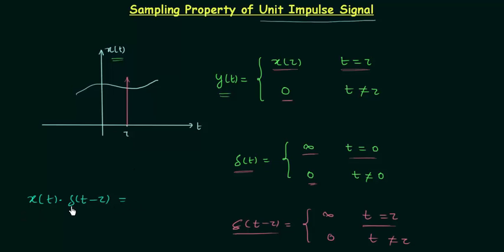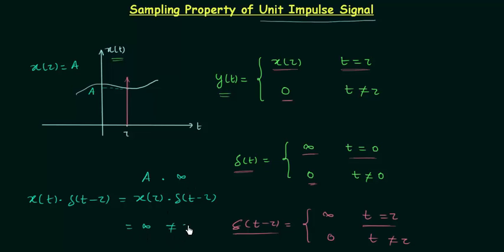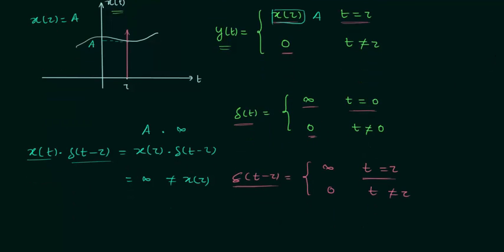We can say that xt multiplied with delta(t minus tau) is the same as multiplying x(tau) with delta(t minus tau). Let's say x(tau) is equal to capital A. So we have A multiplied with infinity, which gives infinity — and that is not equal to x(tau). If you look at signal yt, when t is equal to tau, yt should equal x(tau), or A. So we are not getting signal yt by simply multiplying x(tau) with delta(t minus tau), and we need to do something more.